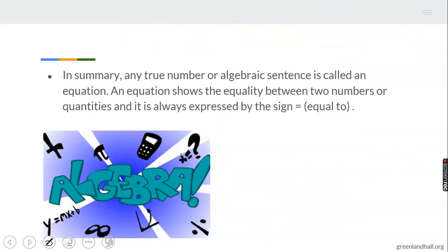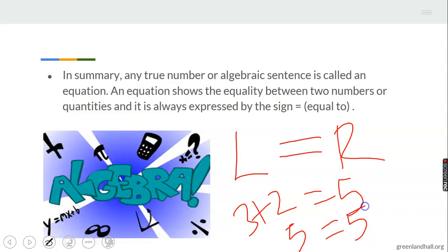In summary, any true number or algebraic sentence is called an equation. An equation shows equality between two numbers or quantities, and it is always expressed by the equal sign. This sign is very important. When you say something is equal to, the left hand side and the right hand side means what you are saying is these things are the same. Three plus two equals five means five is the same as five.